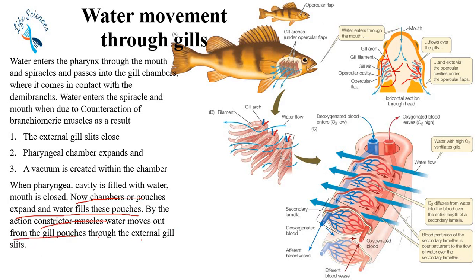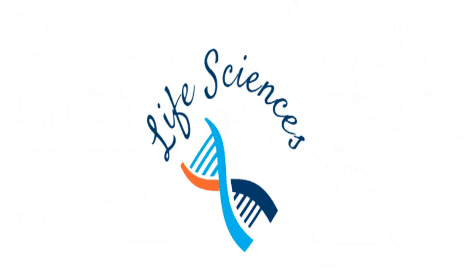Next, by the action of constrictor muscles, water moves out from the gill pouches through the external gill slits. The constrictor muscles constrict the gill pouches, the upper flap opens, and water moves out to the exterior. That was all about today's lecture.